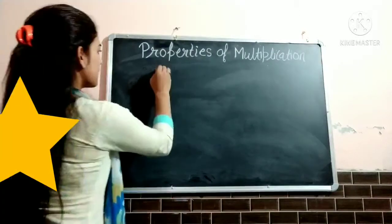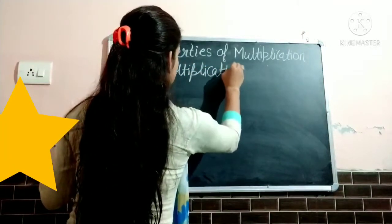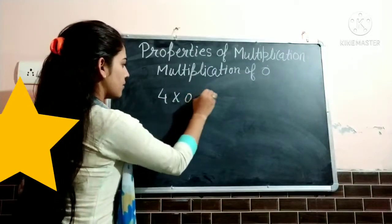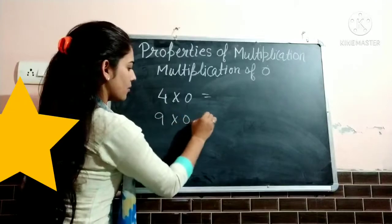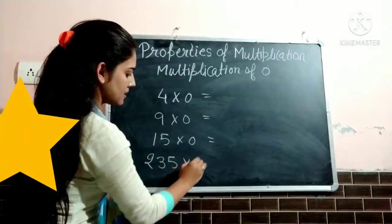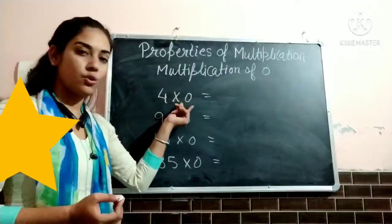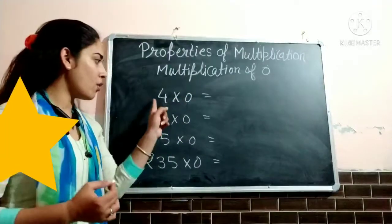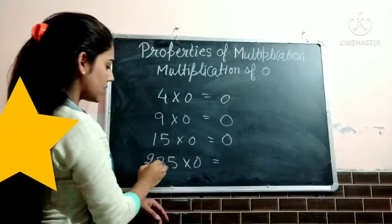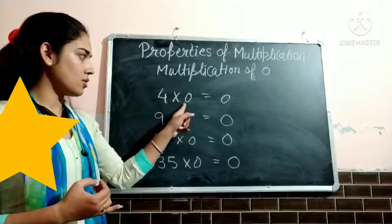Now let us take the next property: multiplication of 0. Let us take examples. 4 multiply 0, 9 multiply 0, 15 multiply 0, 235 multiply 0. So here the property: if we multiply any number by 0, then the answer is 0. 4 zeros are 0, 9 zeros are 0, 15 zeros are 0, 235 zeros are 0. So the product of any number and 0 is 0.